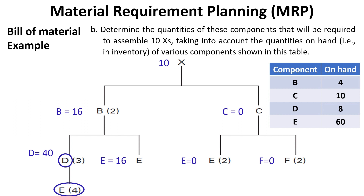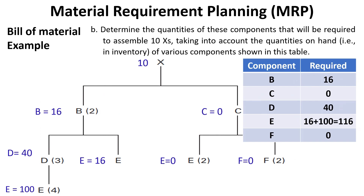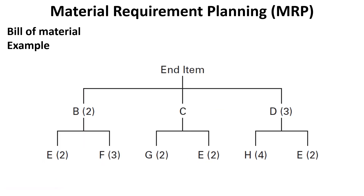In the last level, four E's are required for one D, so to produce forty D's, E equals four multiplied by forty equals one hundred and sixty. The sixty E's on hand have to be subtracted from one hundred and sixty, resulting in one hundred E's. Finally, the required quantities of items to produce ten X's are: sixteen B's, zero C's, forty D's, one hundred and sixteen E's, and zero F's.